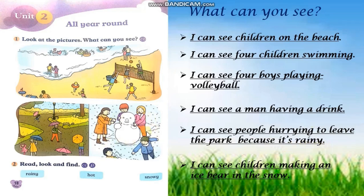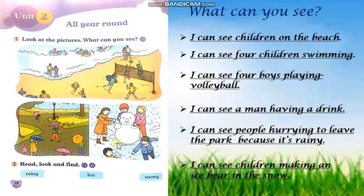Let's look at picture five. There are some children here playing in the snow. How many children? One, two, three, four, and five. This is a bear — an ice bear. So, you're going to say: I can see children making an ice bear in the snow. The weather is snowy.